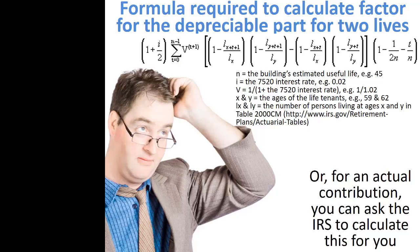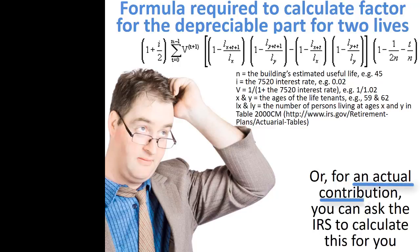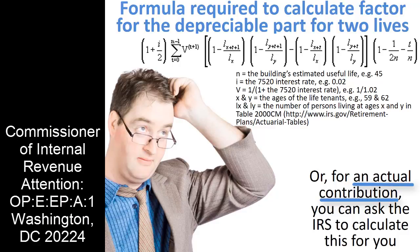Unfortunately, there is no shortcut method for calculating the remainder interest factor to be applied to the depreciable portions of the personal residence if the life estate is for more than one life. If the calculation for a two-life remainder interest gift appears too daunting, you may request the IRS to furnish this factor. To do so requires an actual contribution — not simply a proposal — and that you forward the sex and date of birth of each life tenant, copies of the relevant instruments, and a statement of the estimated useful life of the depreciable property to the Commissioner of Internal Revenue.